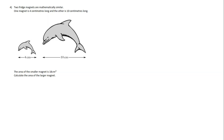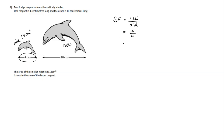Number 4: we've got two fridge magnets that are mathematically similar. One magnet is 4 centimetres long and the other is 10 centimetres long. The area of the smaller magnet is 18 centimetres squared. Calculate the area of the larger magnet. The big clue here is the word similar, so I need a scale factor — new over old. The scale factor is linear, so I take the distances: 10 over 4, which simplifies to 5 over 2.